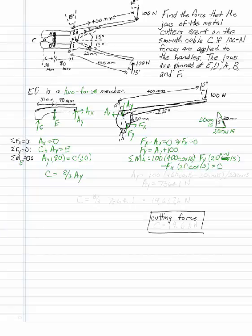And I also have minus F, X times 20 cosine 15. Excuse me. I just want to sign. F, X is already zero. F, Y is A, Y plus 100. So if you solve for that.